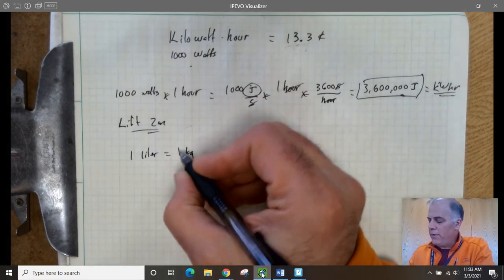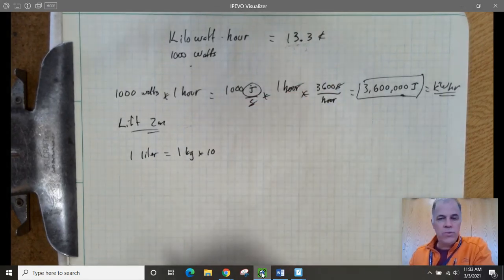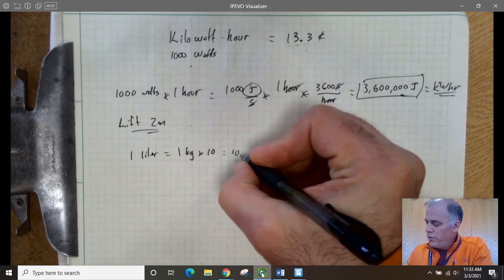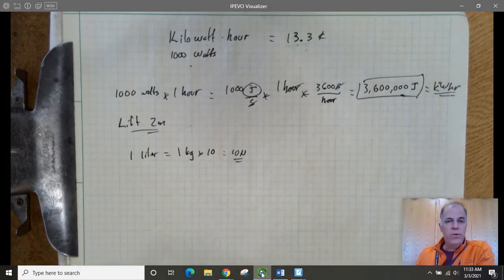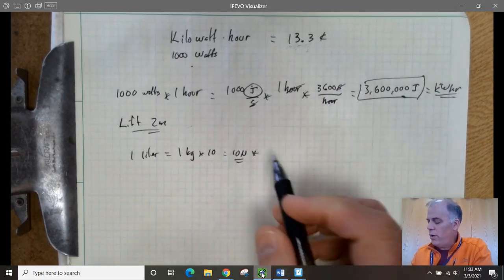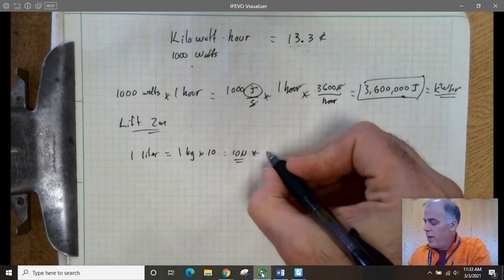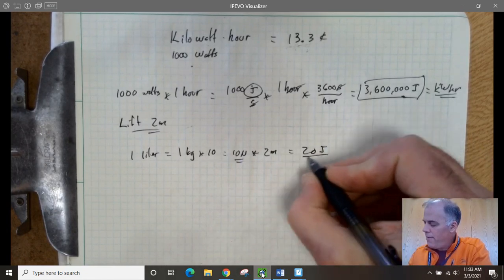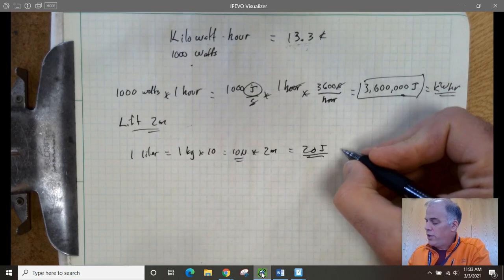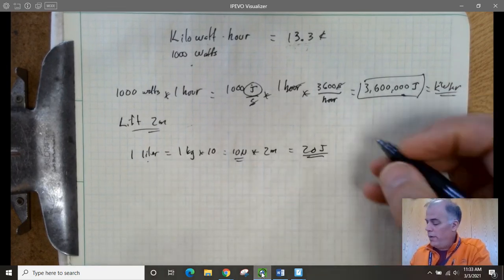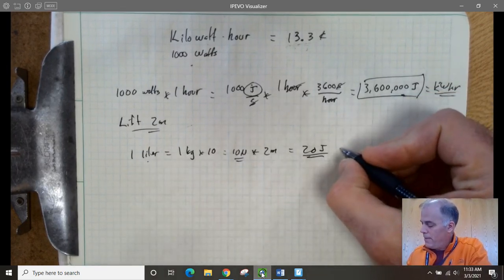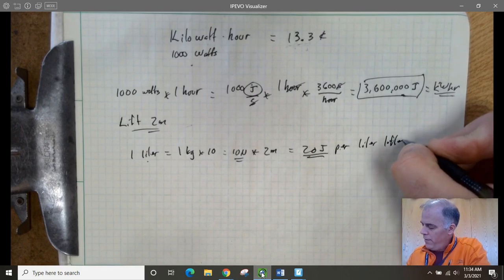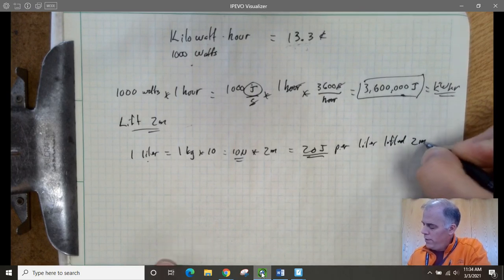So one kilogram of water is one liter. And if we lift, and that one kilogram, let's just use round numbers here, 10 for G, that means it's 10 newtons, 10 newtons of force. And we are going to, 10 newtons of weight, that's the weight of one kilogram approximately. And we're going to lift that two meters. So that means it's 20 joules, 20 joules of energy to lift one liter of water two meters per liter lifted two meters.